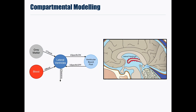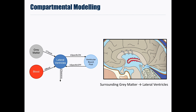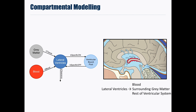Linking this back to the anatomy of the CSF system, the signal contribution from the blood enters the lateral ventricles through the choroid plexus. The signal contribution from the grey matter enters through the ependymal cells that line the ventricular system, which allow quite free flow of solutes between tissue and CSF. The tracer is cleared from the lateral ventricles back to the surrounding tissues including grey matter and blood, as well as to the rest of the ventricular system.